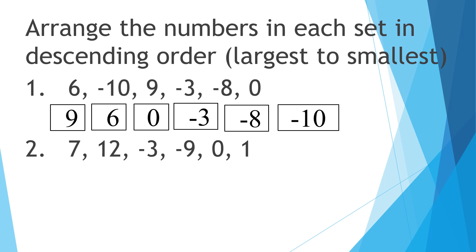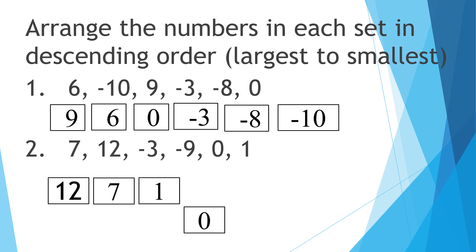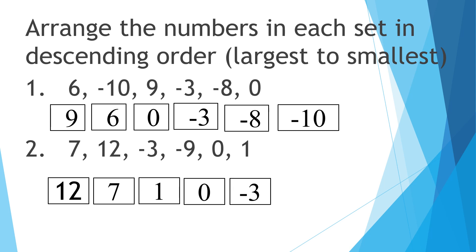Number two: positive seven, positive twelve, negative three, negative nine, zero, and positive one. The largest number is positive twelve, then positive seven, positive one, zero, negative three, and negative nine — the smallest number.